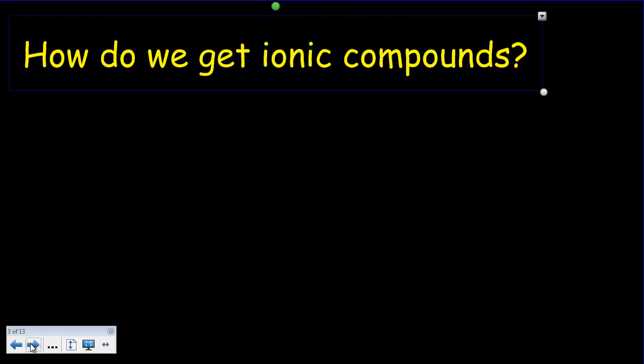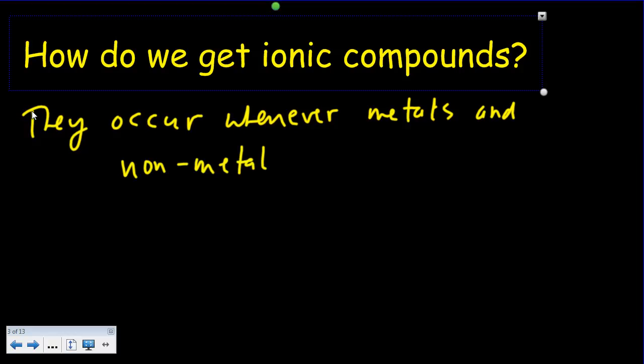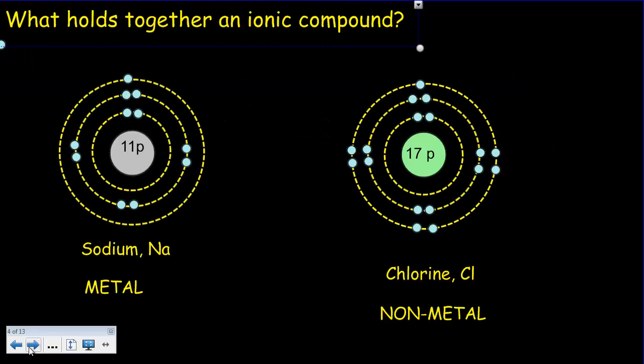How do we get ionic compounds? Well they occur whenever metals and non-metals react together, and what is it that holds an ionic compound together?